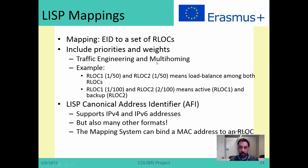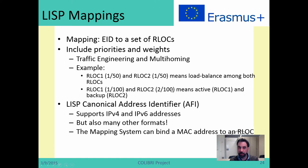How does this traffic engineering work? Each mapping contains priorities and weights. For instance, specifying priority 1, weight 50 for both locators means they have the same priority and you want half the traffic on each — i.e., load balancing. Or you can define priority 1 weight 100 for one locator and priority 2 weight 100 for a second, meaning you have one active link, and if that link fails, please use the second one as a backup. This is a very common policy in ISPs and networks.